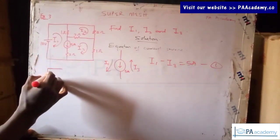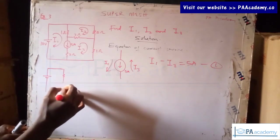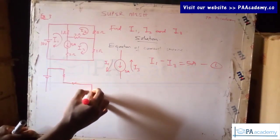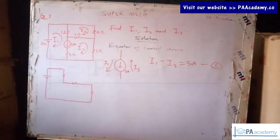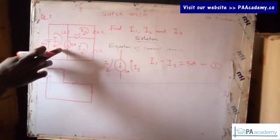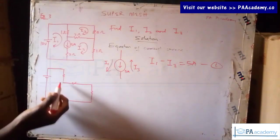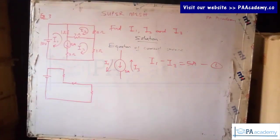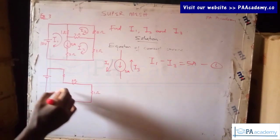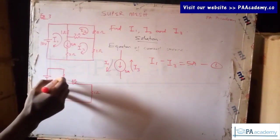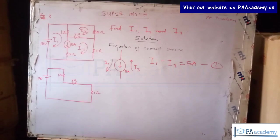We are going to have something like this. As I said in the other example, if you have other elements in the branch where the current is being shared between two meshes, we omit everything together. So we are not going to include the two-ohm resistor in this super mesh circuit. Let's go ahead and add the values: this resistor is three ohms, this is one ohm, and this is also one ohm.